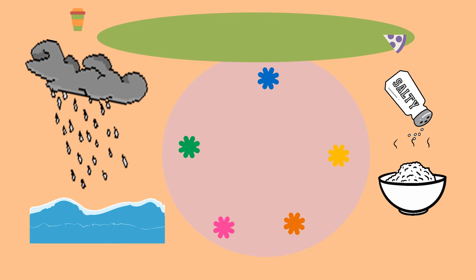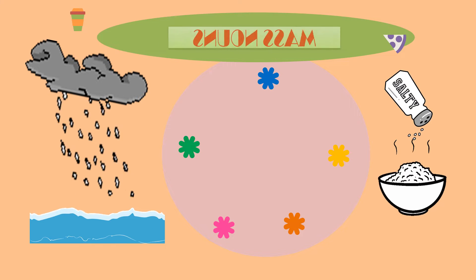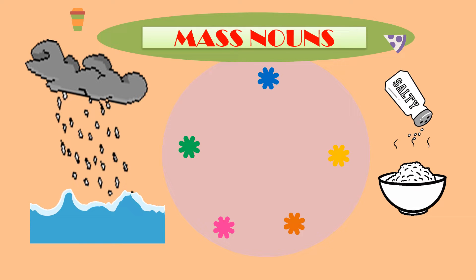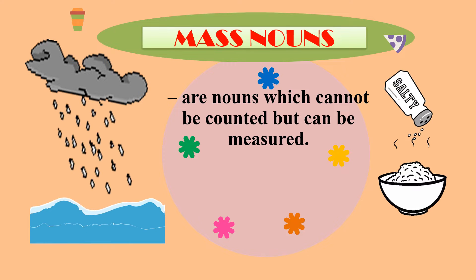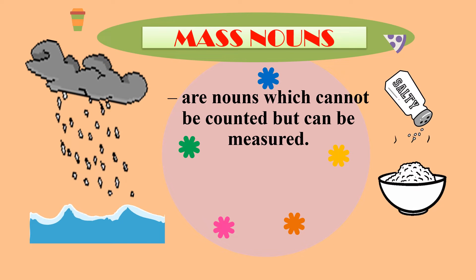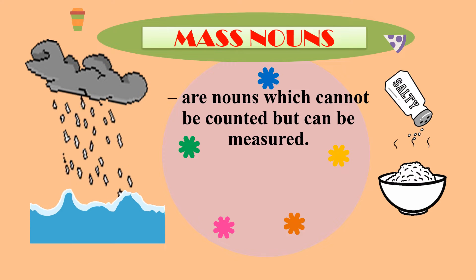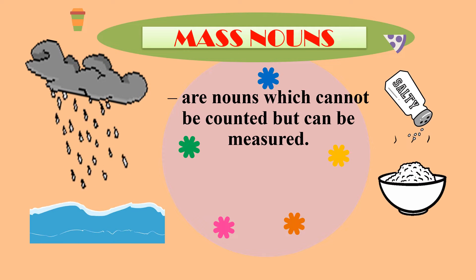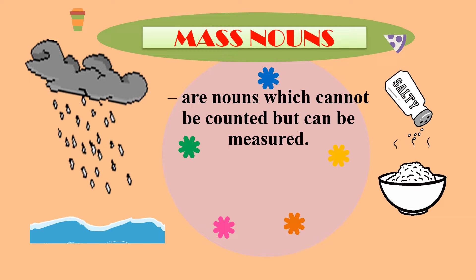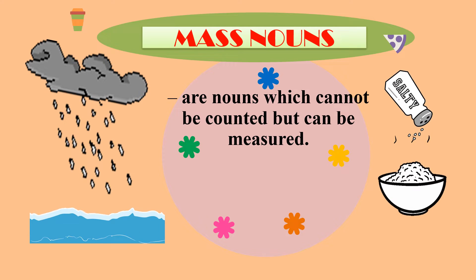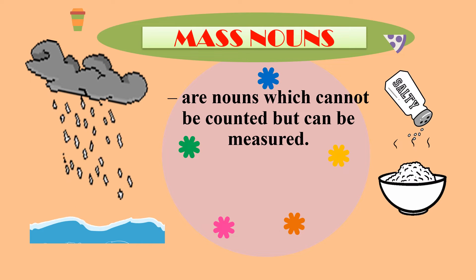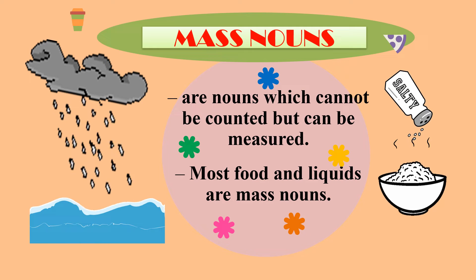Now let us talk about what we call as mass nouns. Mass nouns are basically the nouns that you cannot count individually but can still be measured. Examples of these mass nouns are the objects or nouns that you see in this slide. For example, you have the rain, the sea or the ocean, the salt, or the rice. Just try to imagine — can you count the grains of rice? Or can you even count the rain that pours? No, right? That's why they are called mass nouns. Now, most food and liquids are mass nouns.